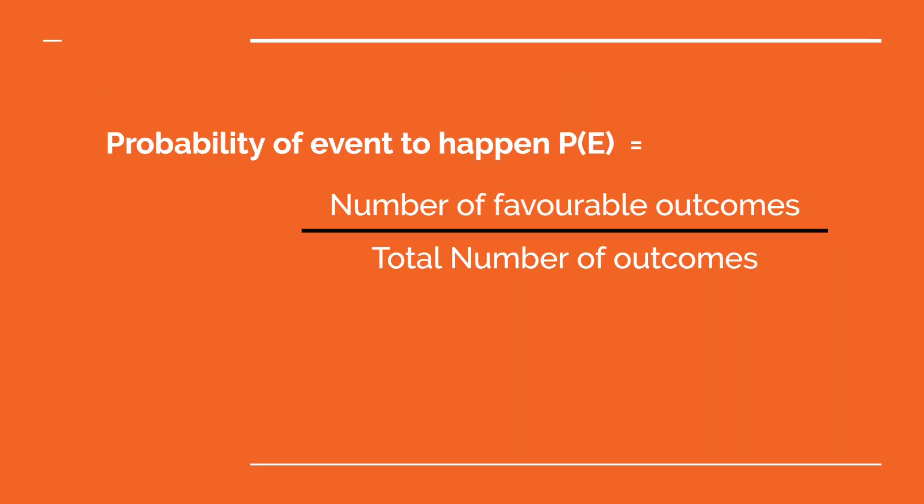Let's revise the formula. Probability of happening of an event is number of favorable outcomes upon total number of outcomes.